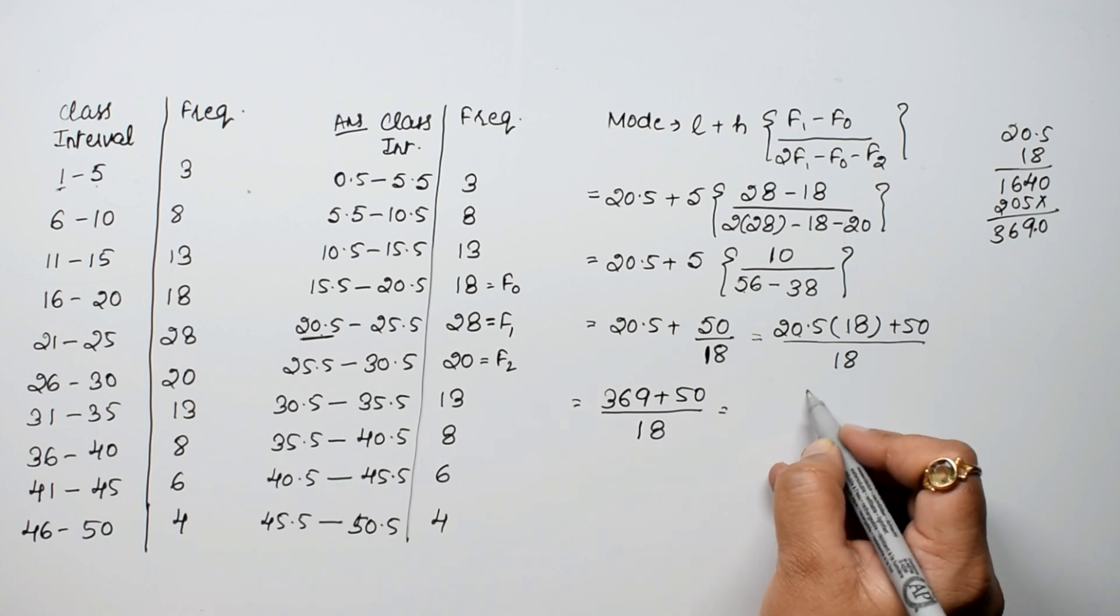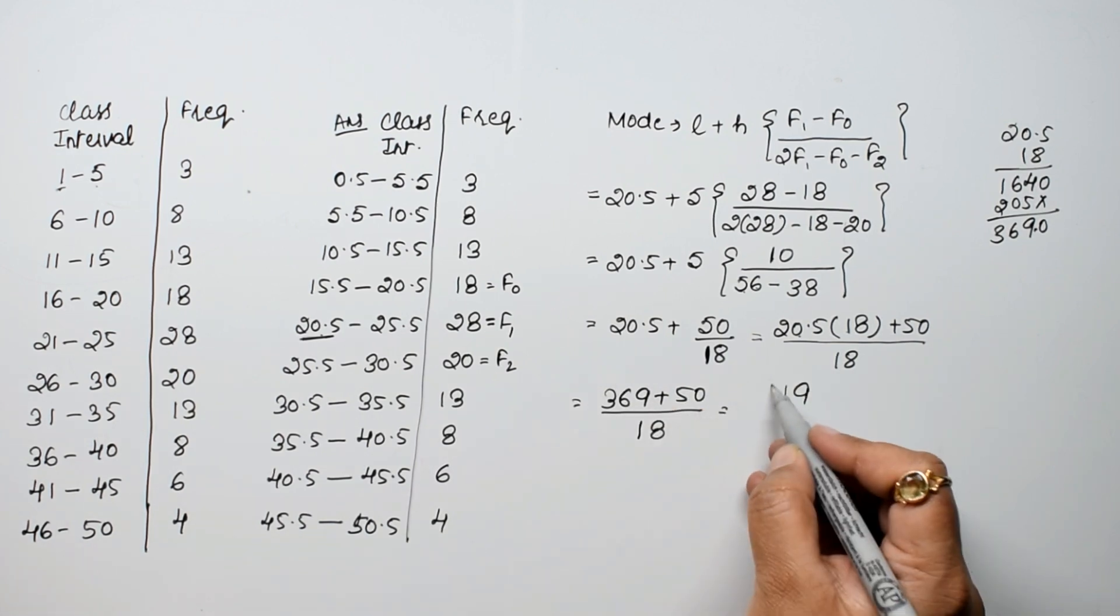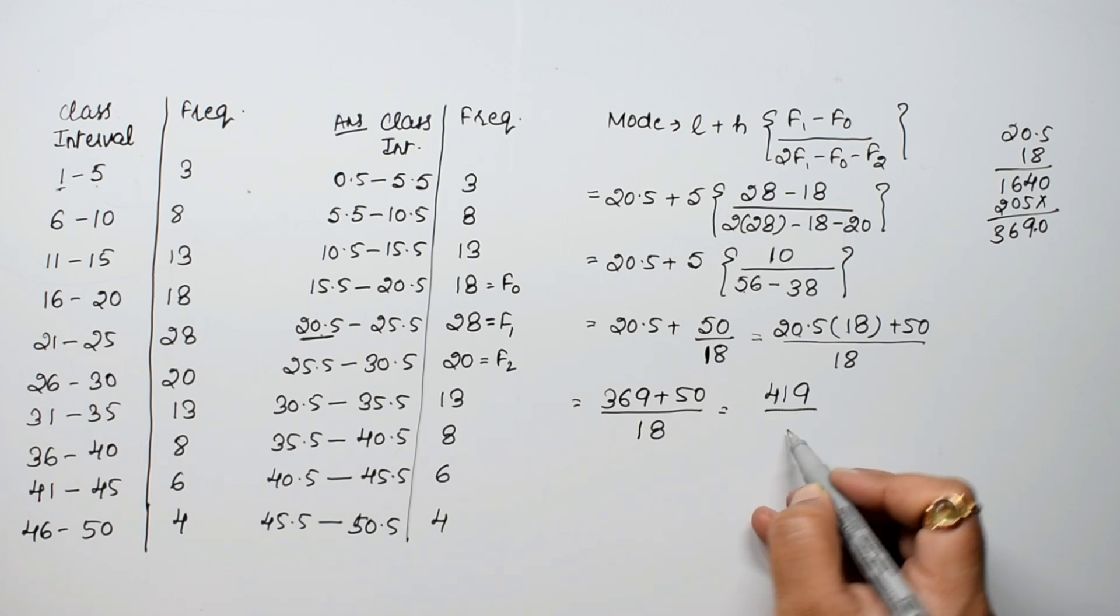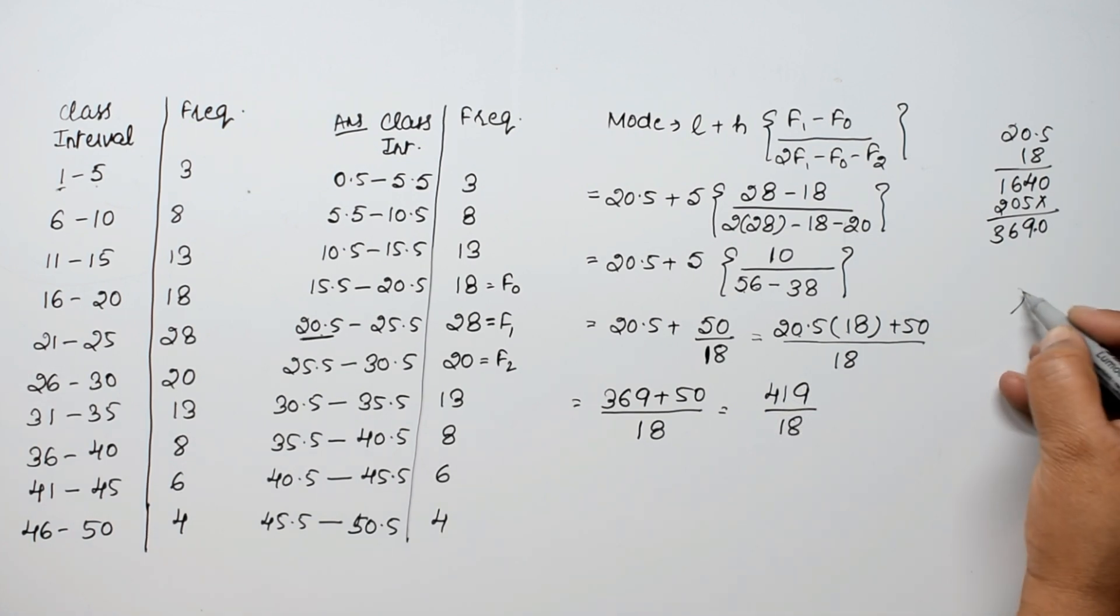Adding these values: 9, 6 plus 5 is 11 carry 1, then 4. This gives us 419 upon 18. Let's check if 3 divides it: 3 into 18 is 6, 3 into 3 is 1, 3 into 9 is 3, but 11 doesn't work. So we'll divide directly.